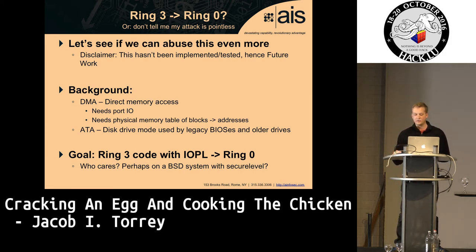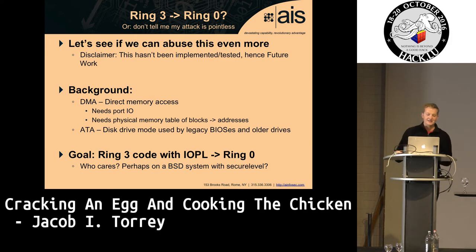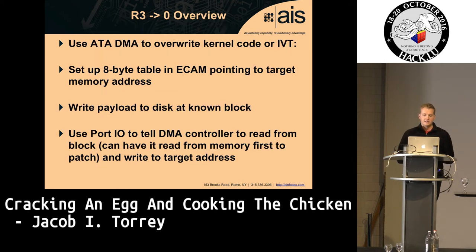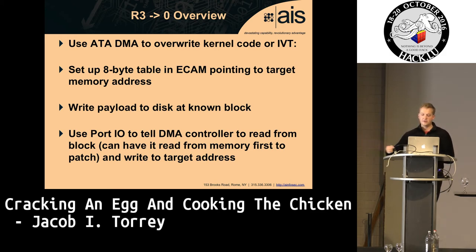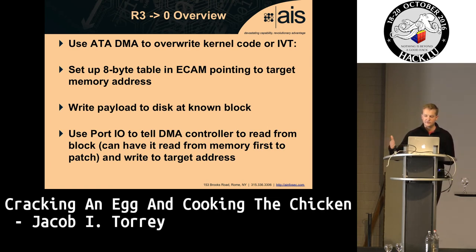I complained to Intel about this and they said 'don't worry, it's not a vulnerability because you already had kernel access.' So let's see if we can go from this to ring three. Two more terms: DMA is direct memory access, and ATA is the legacy disk access mechanism. You can use ATA DMA to tell the hard drive to write to memory at a known location — overwriting the kernel or the interrupt descriptor table. You need port IO access, which things like X server run with via IOPL.